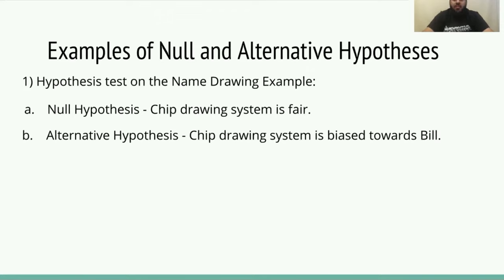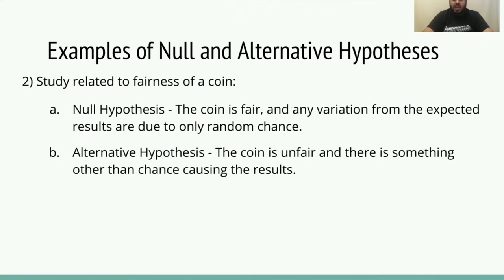Moving on to examples: going back to the name-drawing example, the null hypothesis would be that the chip drawing system is fair and any variation from the expected result is solely due to random chance. The alternative hypothesis would be that the chip drawing system is biased towards Bill. Another example is a coin fairness study: the null hypothesis is that the coin is fair and any variation is due to random chance; the alternative is that the coin is unfair and something other than chance is causing the results.